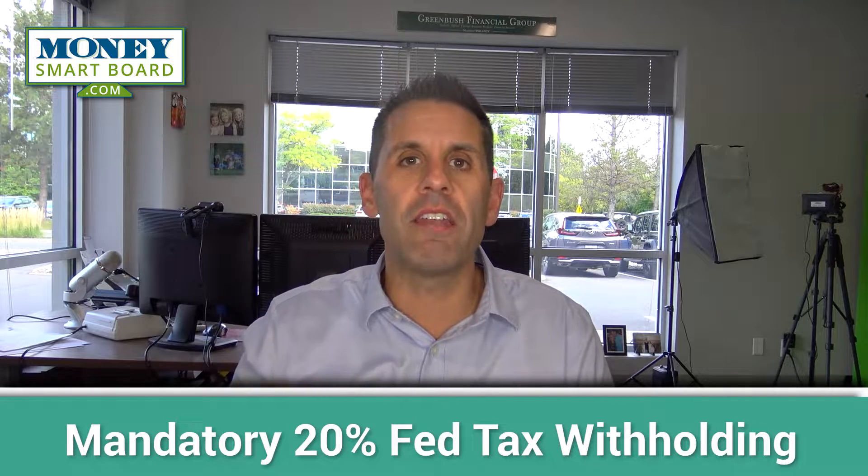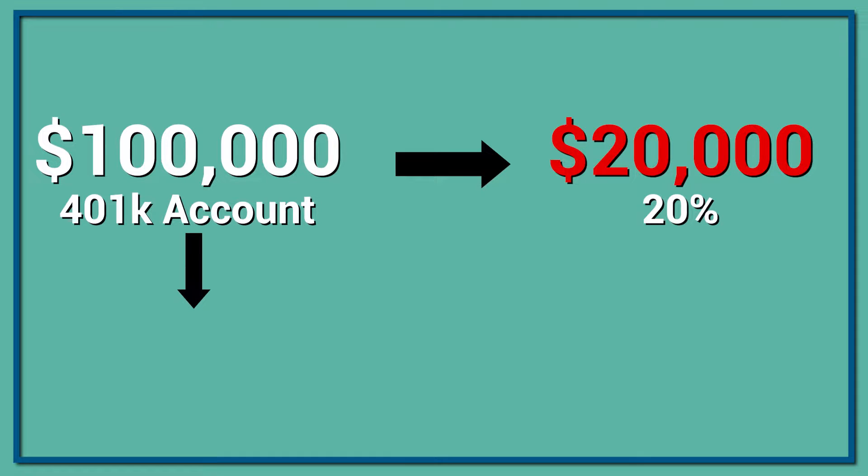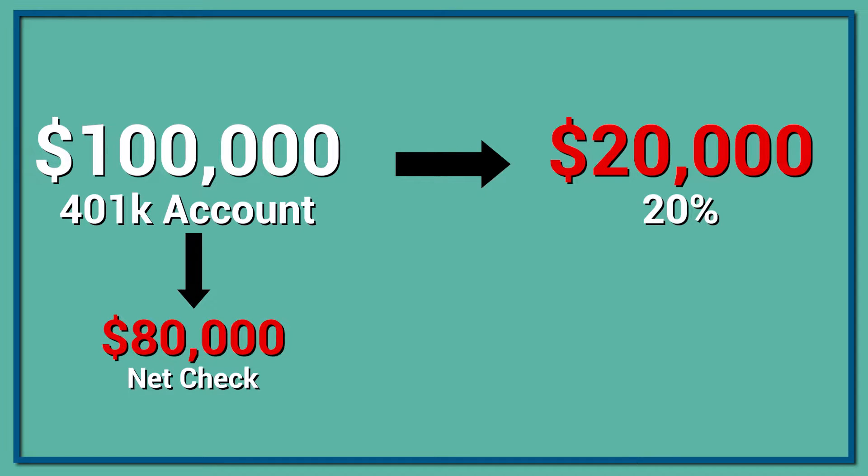Regardless of your tax bracket, 401k plans have something called a mandatory 20% Fed tax withholding, which means by law, 401k platforms are required to withhold 20% in Fed taxes. This is not a penalty. What they're actually doing is taking a portion of your 401k balance and remitting it to the federal government to be applied towards your Fed tax liability for the year. They have no idea what your tax rate is — it's just that set amount for everyone. So if you take a $100,000 disbursement, they're going to automatically take $20,000 and send that to the federal government, and you would get a net check for $80,000.